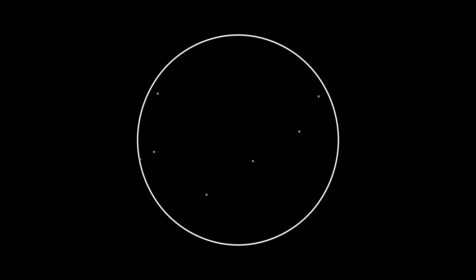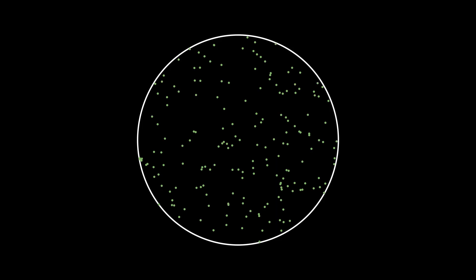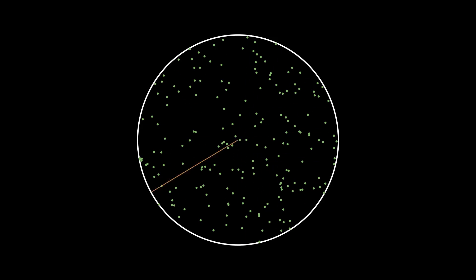For example, we start with the simpler problem of finding the probability that the distance of a point chosen uniformly randomly in a unit circle from its center is less than 1/2. At first glance, we may think that any point chosen will be lying on a radius of the circle. Because of the rotational symmetry of the circle, the actual radius doesn't matter, only where in the radius the point lies.